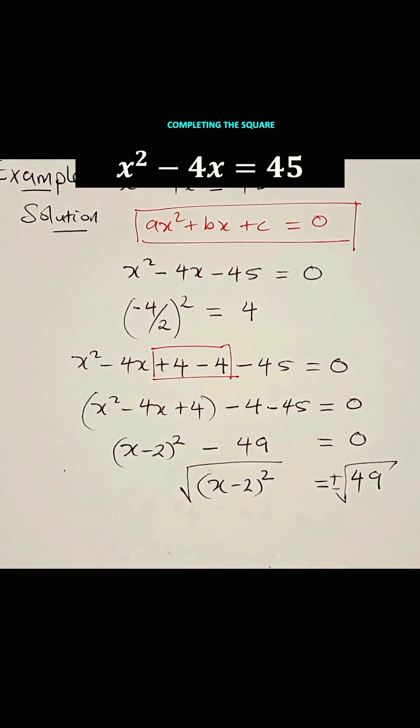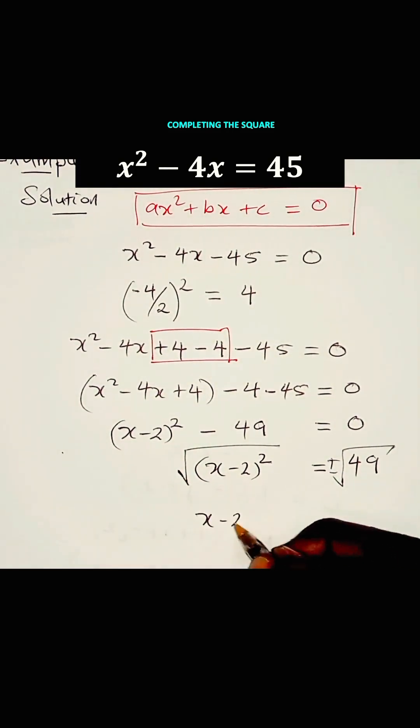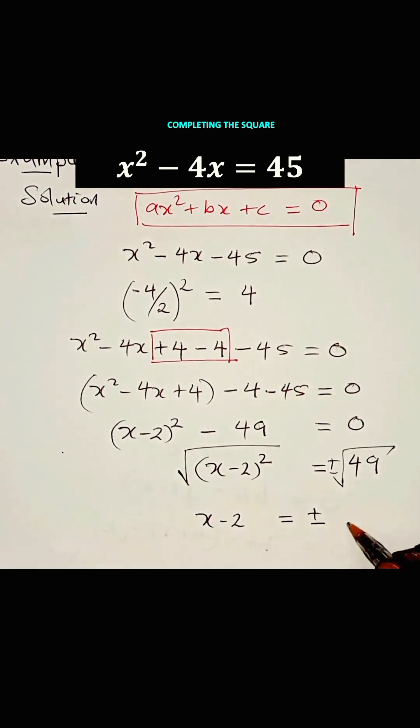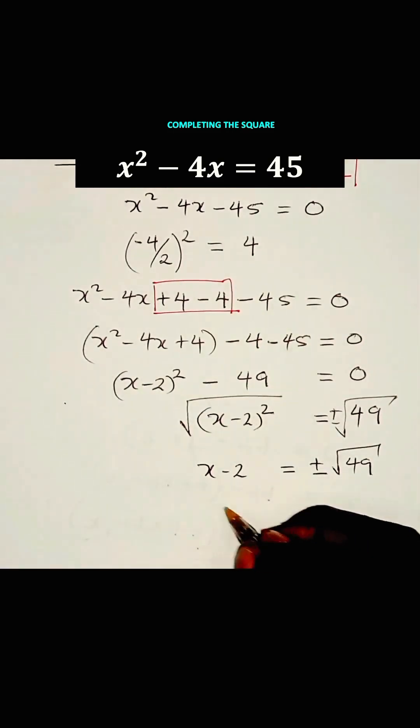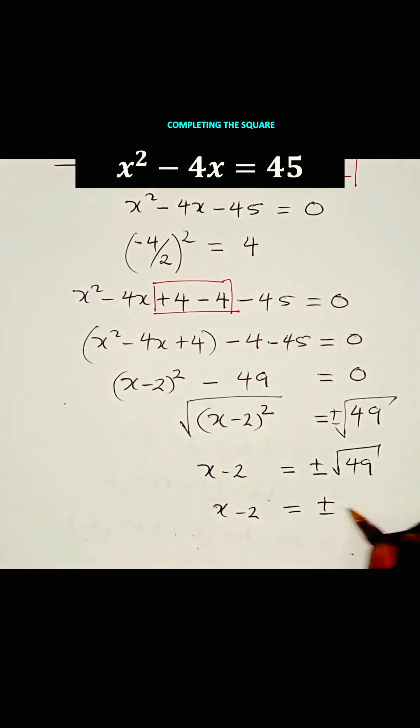So, we have plus or minus 49 on the right-hand side. Then we have X minus 2 is equal to plus or minus the root of 49. Then we say X minus 2 is equal to plus or minus 7.